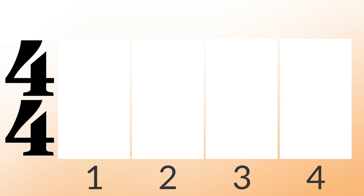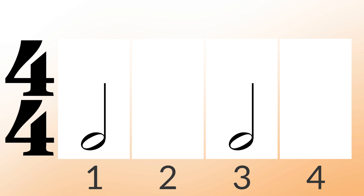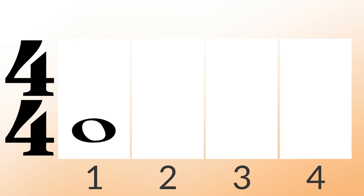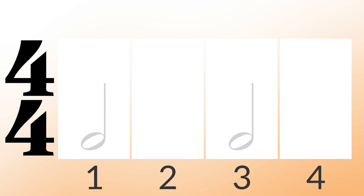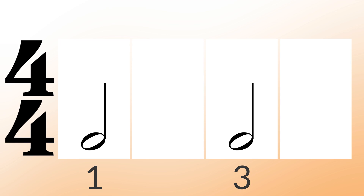Let's think about some of our other note values. A half note is worth two beats, so it's the equivalent of two boxes. A whole note is four beats, so it would fill all four boxes. Notice that when we count, we only say the beat on which the note first begins.